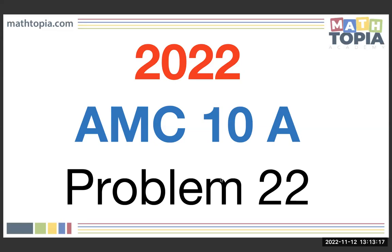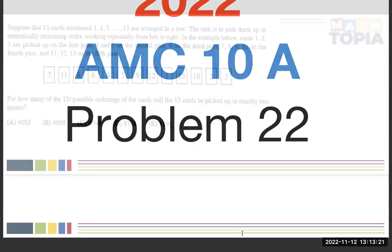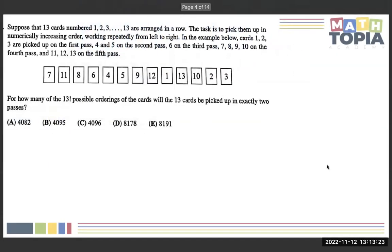This is the 2022 AMC 10A, Problem 22. Suppose that 13 cards numbered 1 through 13 are arranged in a row. The task is to pick them up in numerically increasing order, working repeatedly from left to right.